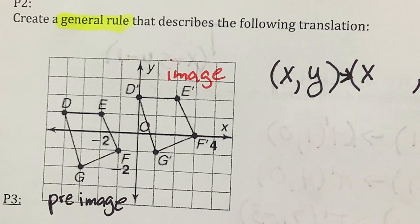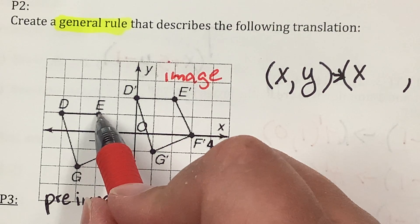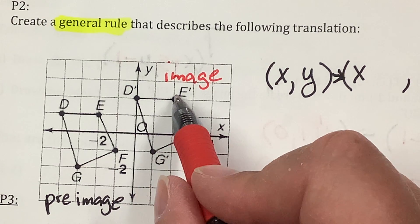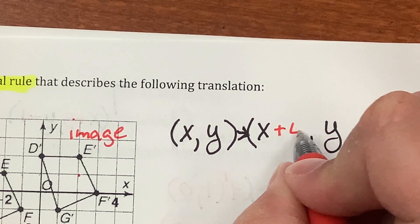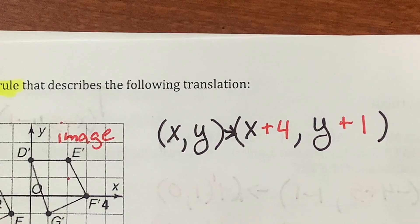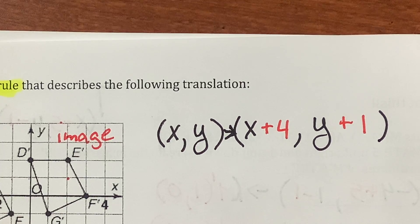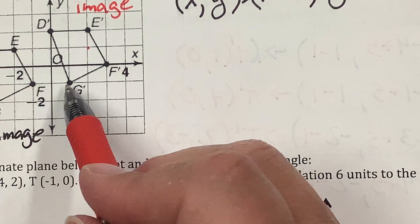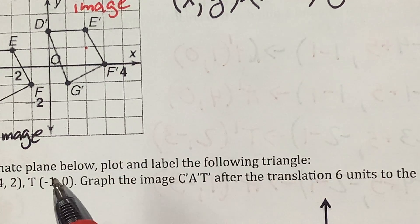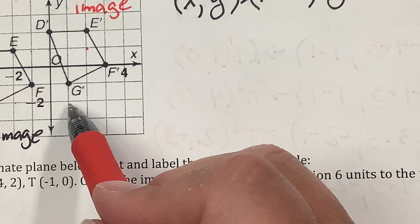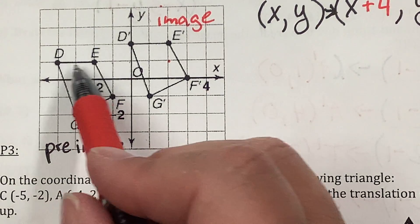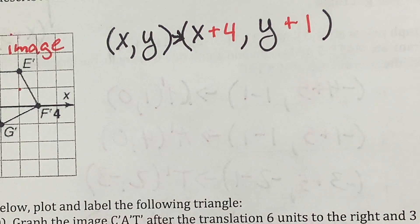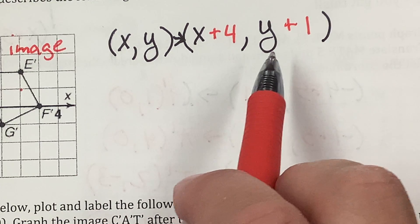The general rule has X and Y, and you add something to X and add something to Y — no big capital T needed. Let's pick E: it goes four places to the right and up one. So I'm adding four to X and adding one to Y. I'll check the other points. F: four units to the right and up one. G: four to the right and up one. D: four to the right, up one. So my general rule is X plus 4, Y plus 1.